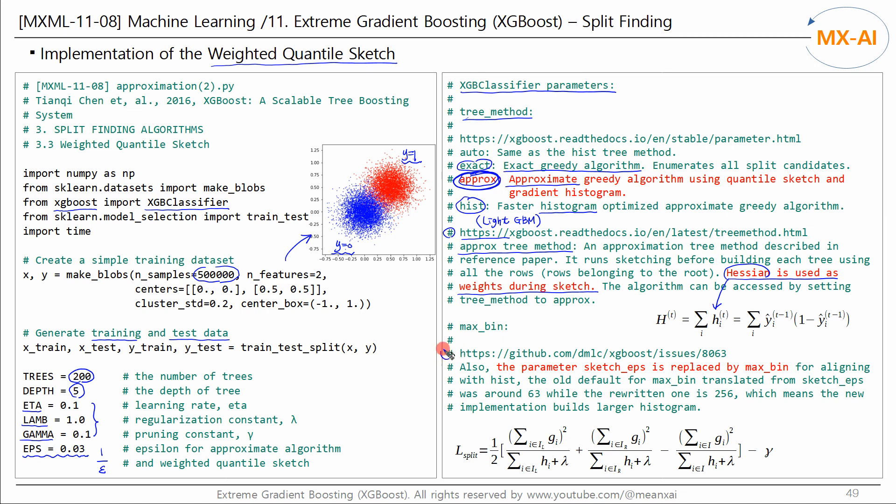And according to this document, the sketch_eps parameter, which stands for the epsilon, has been replaced by max_bin. Here we will use the tree_method and max_bin parameters. And in the formula for calculating gain, lambda on the left means the lambda in this formula, and gamma means the gamma in this formula.